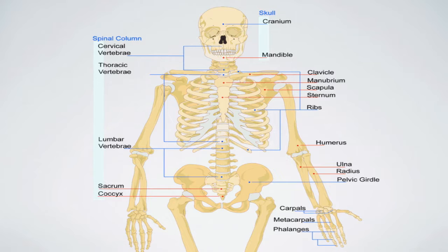This is the humerus — it's very funny. This is the radius and ulna. The arm is about to fall — we don't want that. This is the tibia and fibula. And this is the scapula. Good job! I think we're good.